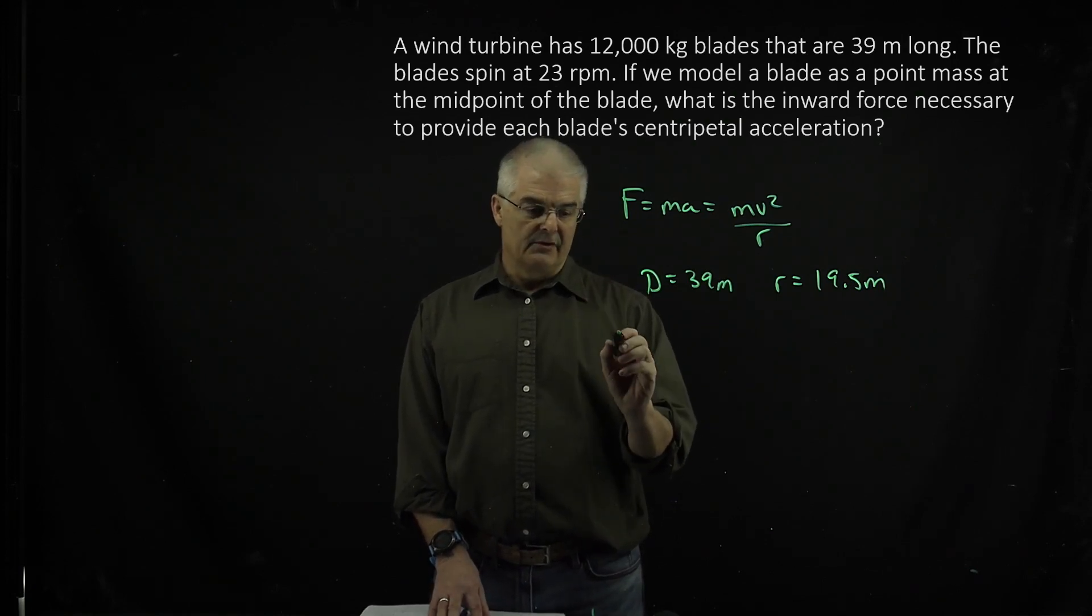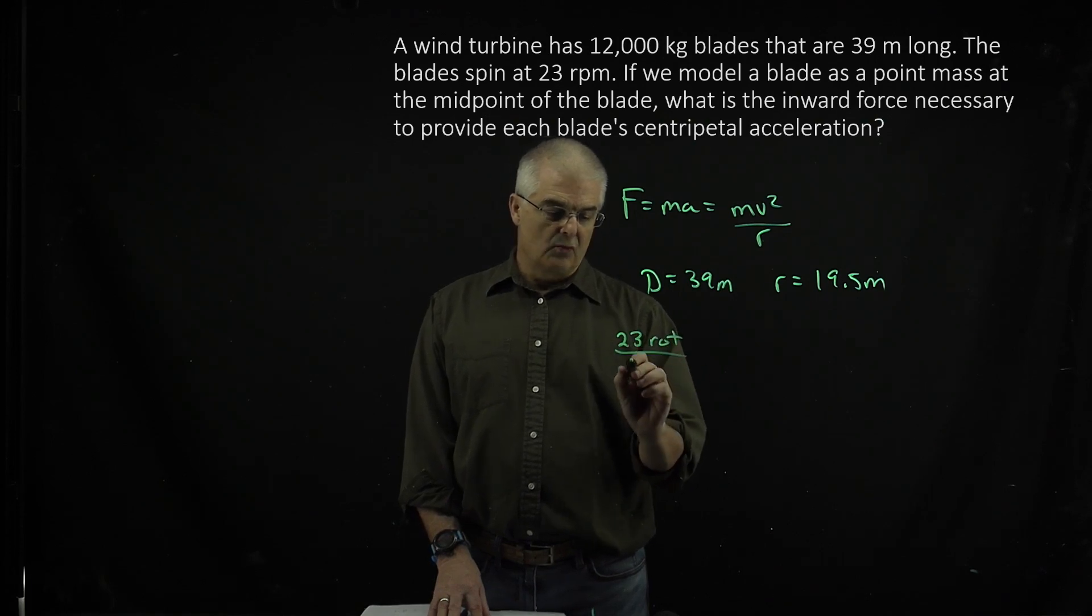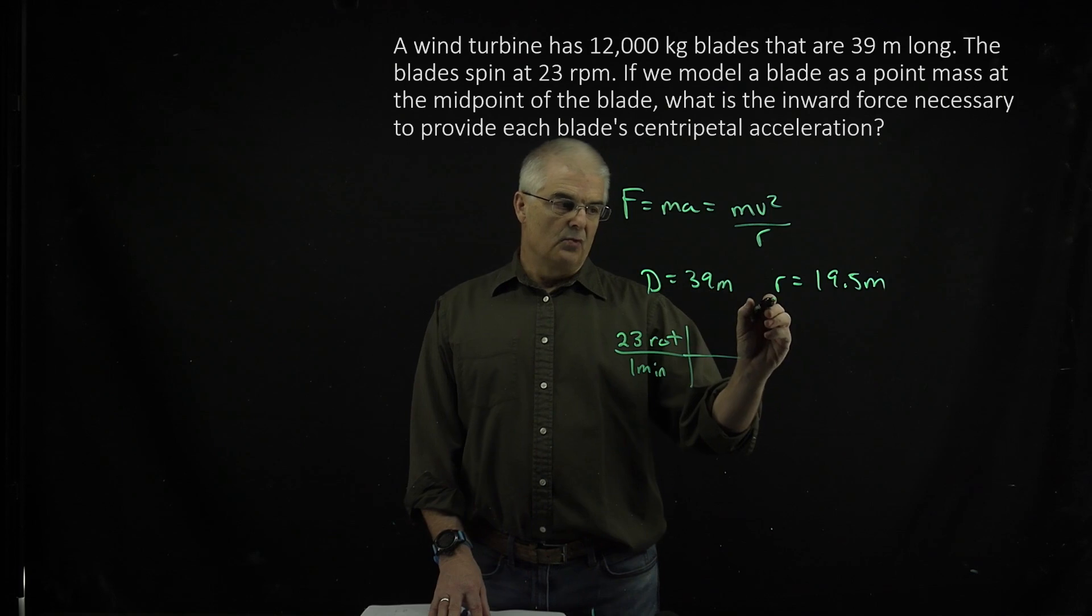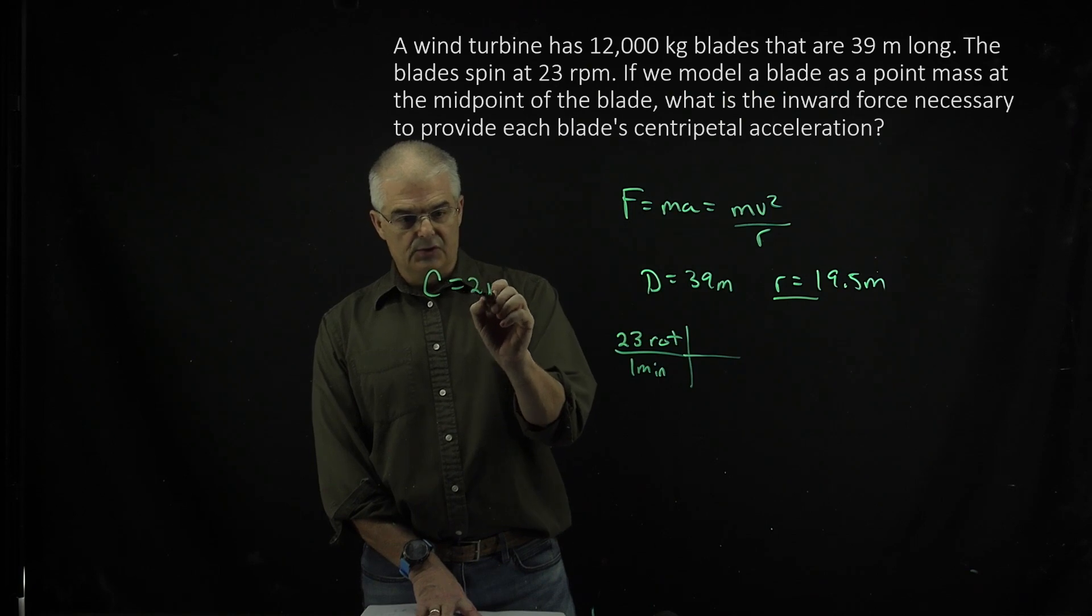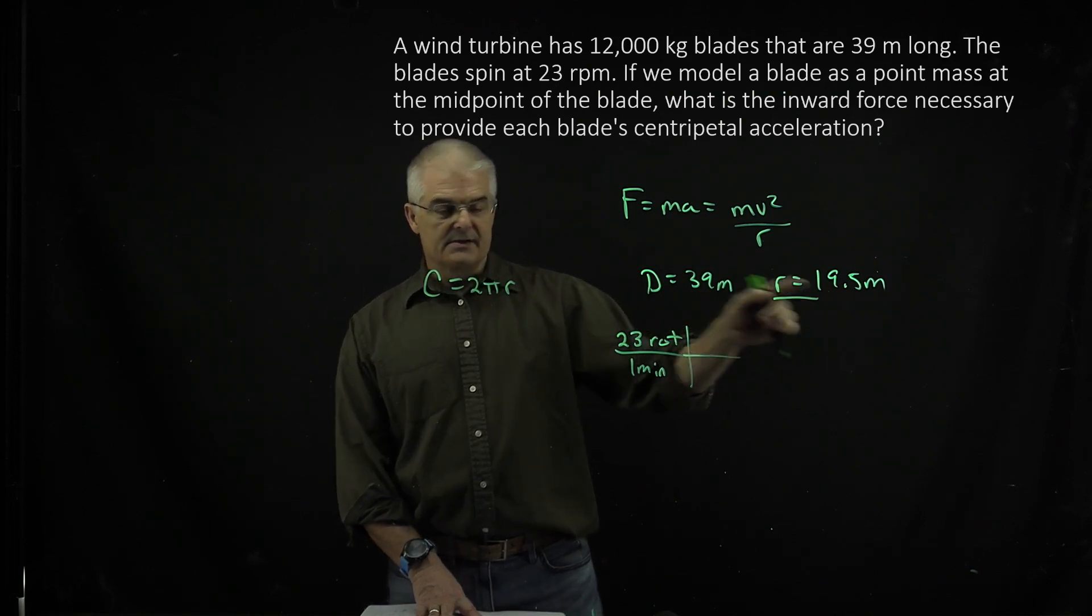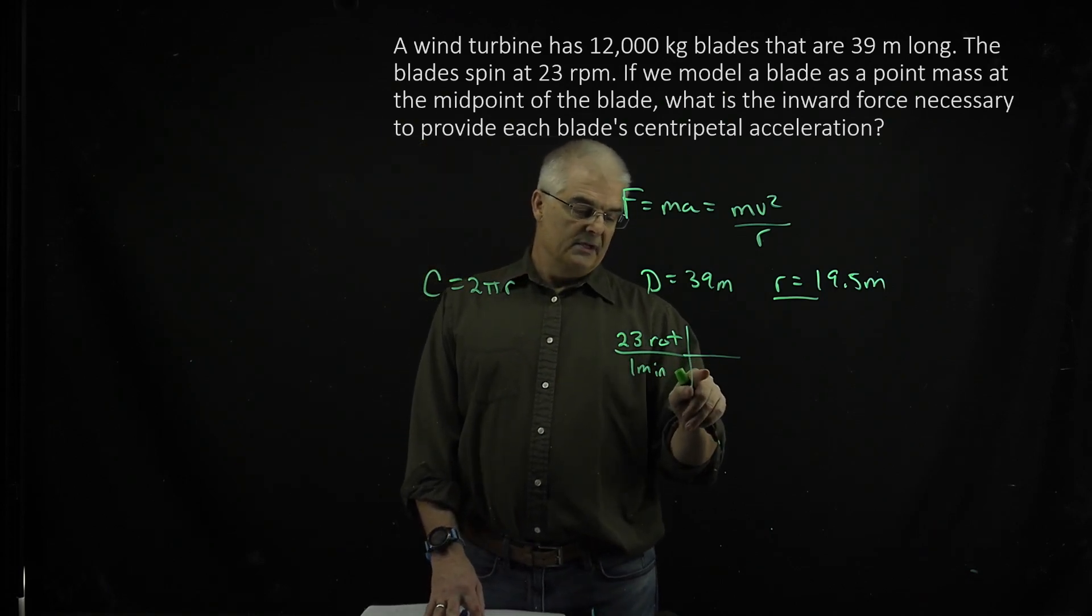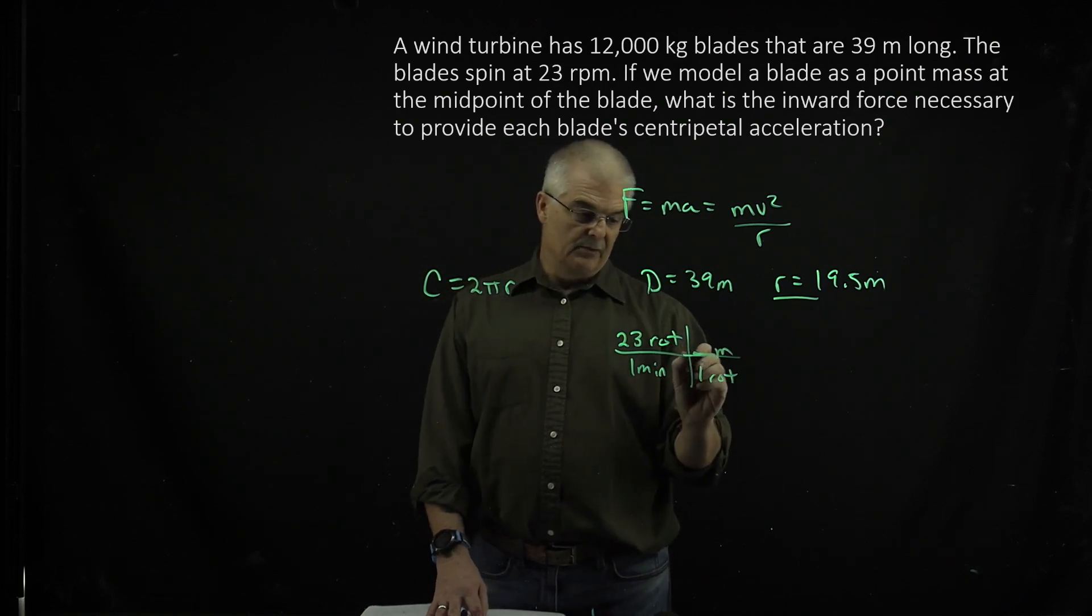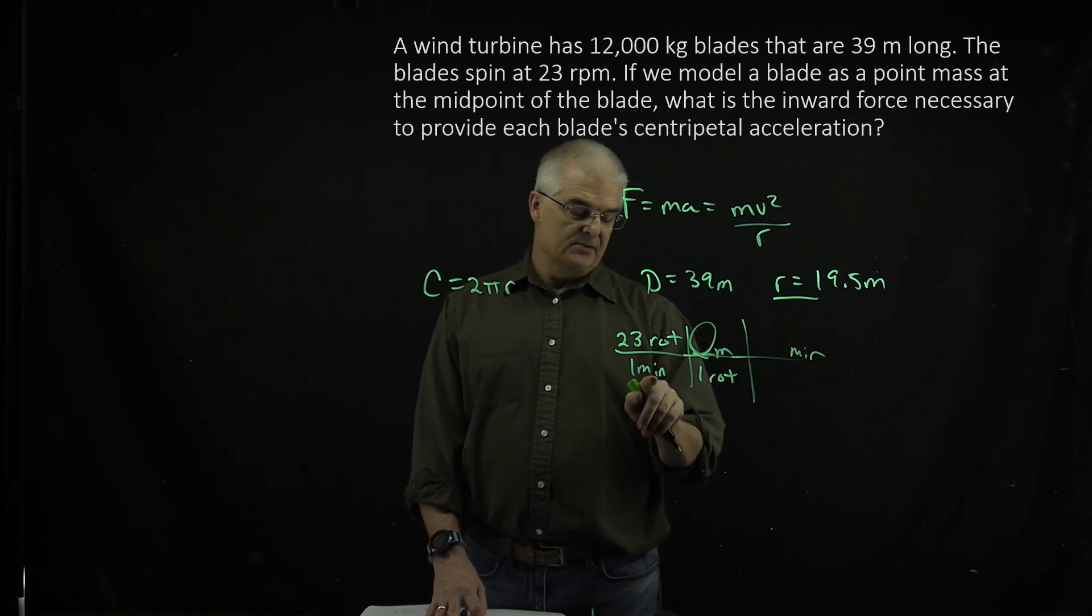So the trick on this question is you've got to convert 23 rotations per one minute, and I'm a dimensional analysis guy. You have to figure out what one rotation is. What is one rotation, how many meters is one rotation? If you recall, the circumference of a circle is 2πR. R is 19.5 times 2 times π. Then you can say one rotation is so many meters from 2πR. So you put a number in here. I want to get meters per second, so I'm going to put minutes on the top because I want to cancel this minutes.